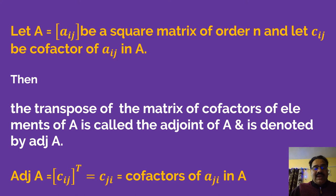So adjoint A means Cij. Cij is the matrix of cofactors. First we will find the cofactor, then we will take the transpose of this. After taking transpose, rows are converted into columns and columns into rows, then you will get Cji. Cji is the cofactor of Aji in the square matrix A.